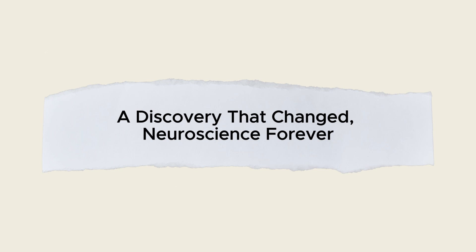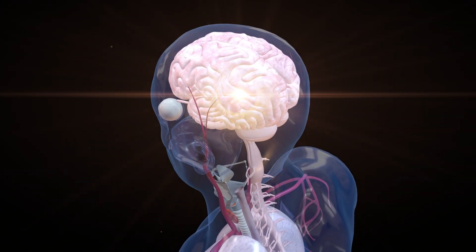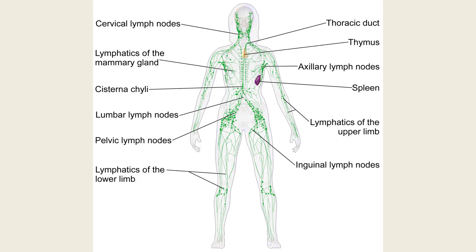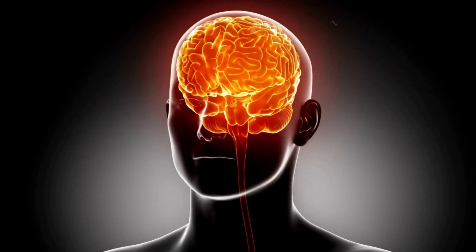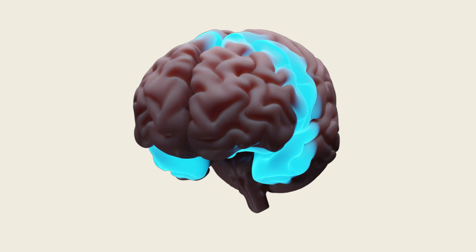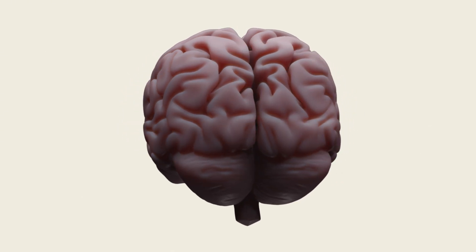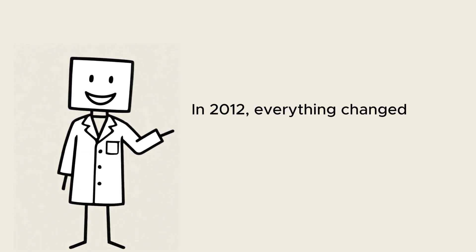A discovery that changed neuroscience forever. For decades, the brain was thought to be an isolated fortress, protected by the blood-brain barrier. Every other organ relies on a lymphatic network to remove waste, but the brain seemed shut off. No pipes, no drains, no obvious way to clear out the debris of constant neural activity. Scientists assumed that brain cells simply recycled their own waste or relied on some mysterious, undiscovered mechanism. Then, in 2012, everything changed.